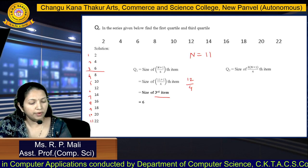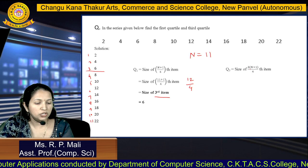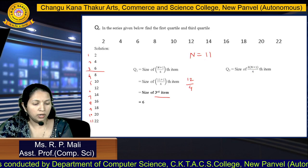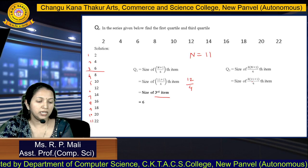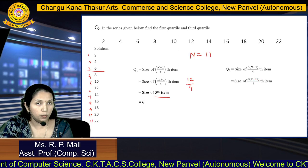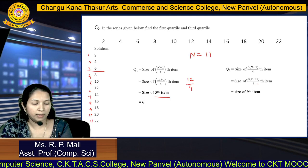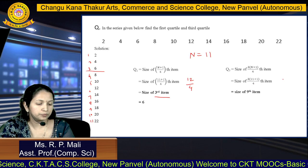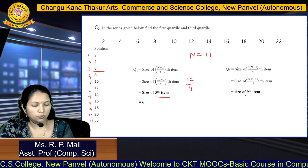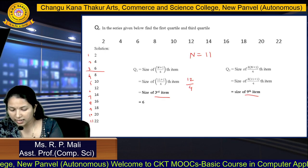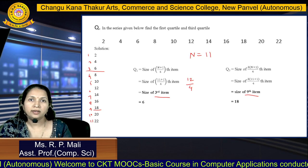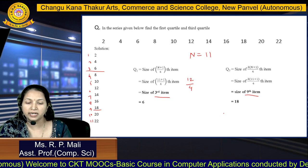Same way, we are going to find Q3. The formula is size of 3(n+1) divided by 4. n is 11, so 3 into (11+1) equals 3 into 12 divided by 4, which gives us the 9th item. At the 9th position, 18 is there. So your third quartile is 18. This is for your individual data.